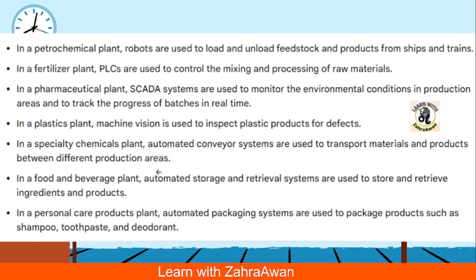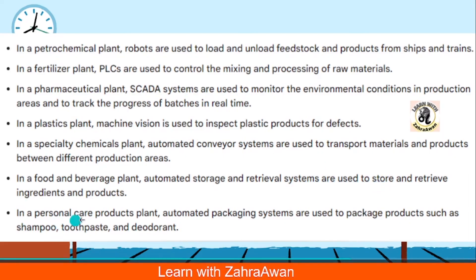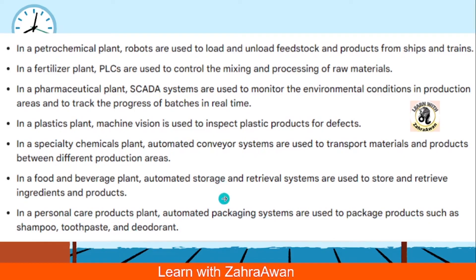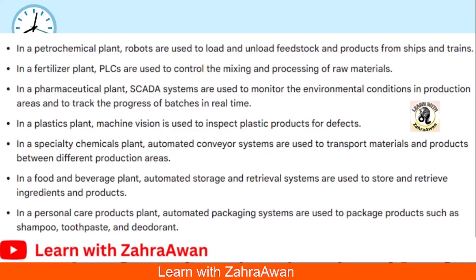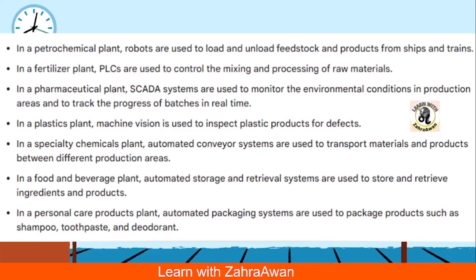Automated conveyor systems are also a type of automation used in chemical plants to transport products. In food and beverage industries, storage and retrieval systems are used to store and retrieve food ingredients. In personal care product plants, automated packaging systems are used to package products like toothpaste, shampoo, and deodorants. If you have any questions, you can comment on my Facebook and Instagram — please follow and share.